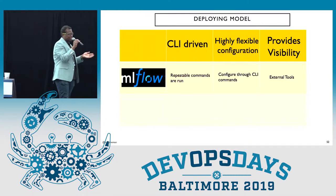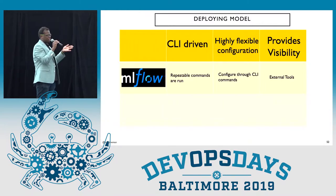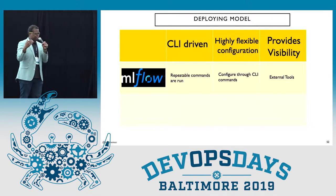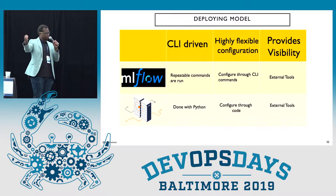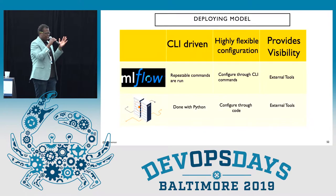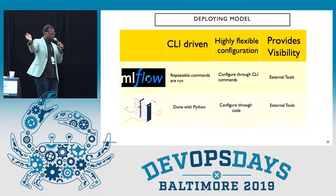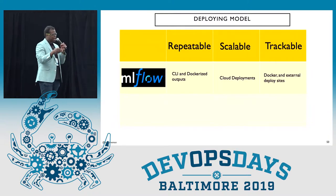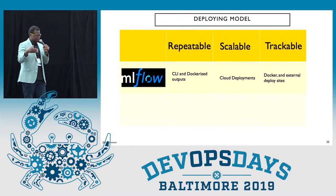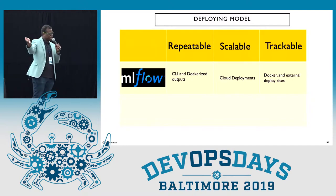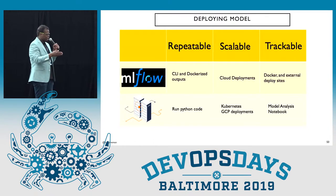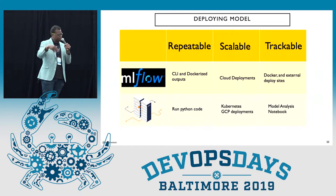To reiterate: MLflow has the CLI that allows you to build images and push them. It's highly configurable based on all the inputs that can be put in, and provides visibility through external tools. It's a repeatable process because you have the CLI, scalable through different services like SageMaker and Azure ML, and trackable via the UI. TFX is the same way — everything is codified, you can see what's happening, it uses Google Cloud Platform for deployment, and you can see what's happening through the UI.